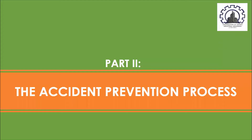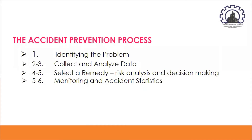Let's move on to the accident prevention process. The accident prevention process has six steps: first, identifying the problem; second and third, collecting and analyzing the data; fourth and fifth, selecting a remedy and risk analysis and decision making; and the last one is monitoring and accident statistics.